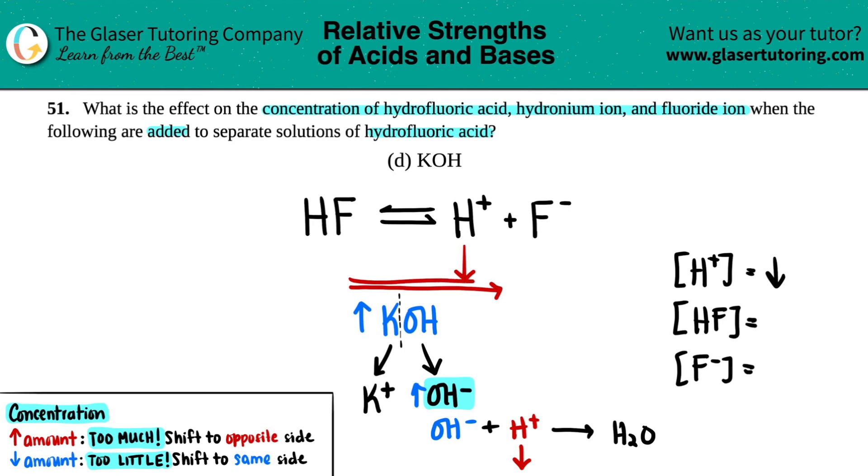And if you're going to the right, that means that the F minus has to increase. And if you're going from HF to the products, HF would have to drop. So HF would decrease and F minus would increase.